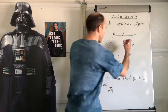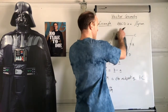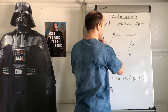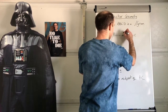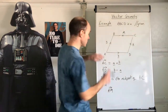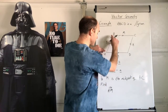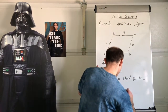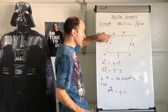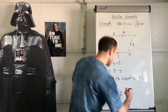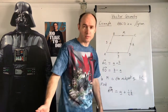M is the midpoint of BC. Find AM. So we go A to B first — that's a — and then we're only going halfway along BC, so that's half of b. Therefore AM equals a plus half b.